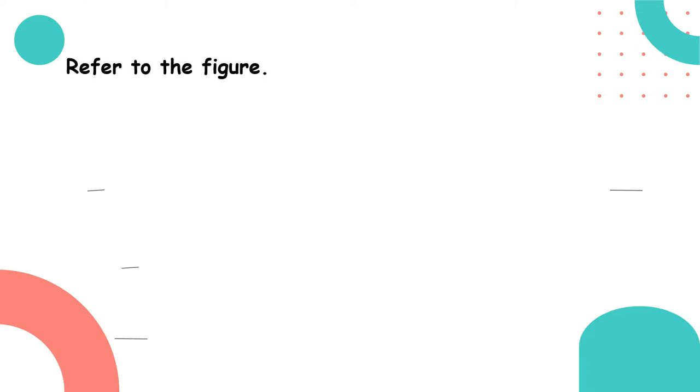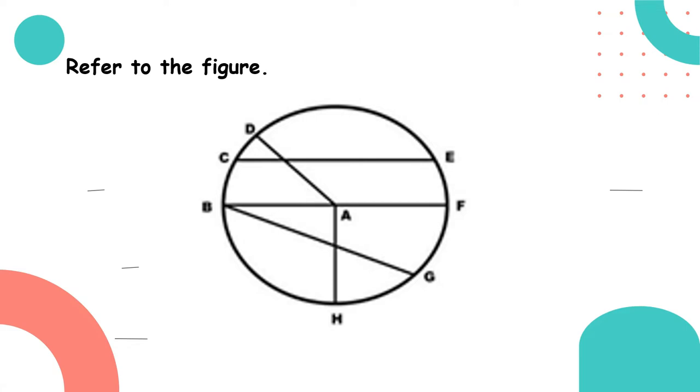So let us refer to the figure. This is what we call the circle. Look at what's in the center - that line has letter A, so that is the center. So if we name the circle, it is circle A, capital letter. Next, the line between C and E, it is called chord. So the name of the chord is line segment CE because the two points are C and E. We have another chord, between B and G, so chord or line segment BG.